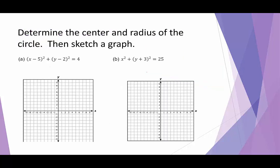In our next two examples, we're given equations. We need to determine the center and the radius of the circle, then sketch the graph. In example A, the center of the circle — h, k — would be 5, 2. The radius squared is equal to 4. Taking the square root of both sides, r is positive or negative 2, but since it's a radius, it must be positive, so the radius is 2.